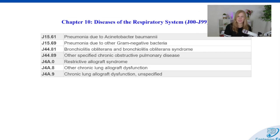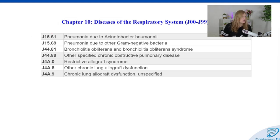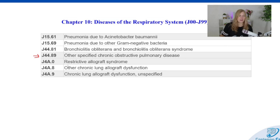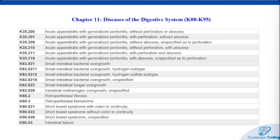In 2017, carbapenem-resistant bacteria led to an estimated 8,500 infections and 700 deaths in the U.S. based on an internal CDC review, so we have new codes in Chapter 10 to reflect this. We also have some additions to the bronchitis and COPD codes, including an other specified COPD code — J44.89, other specified COPD. And then some allograft-related lung illnesses were added: J4A.0 for restrictive allograft syndrome, J4A.8 for other chronic lung allograft dysfunction, and J4A.9 for chronic lung allograft dysfunction unspecified.